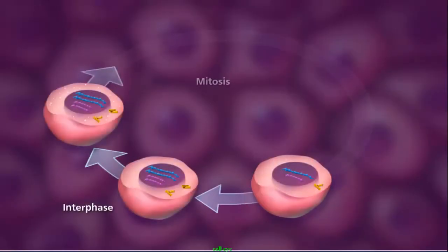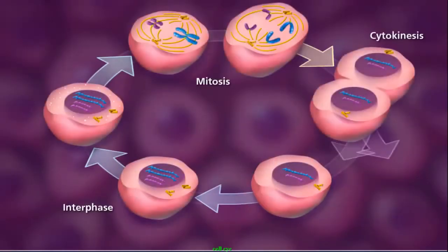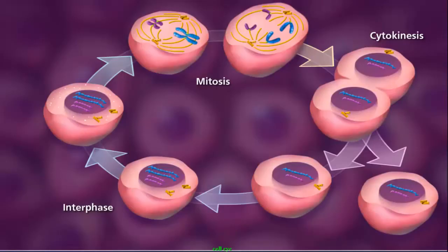From interphase to cytokinesis, the entire process of cell division can take on average 10 to 20 hours in a typical plant or animal cell.